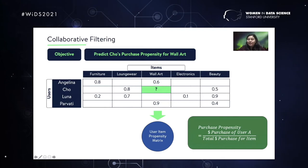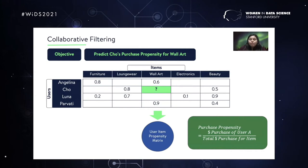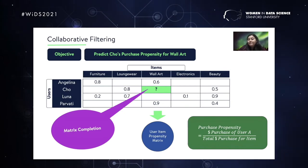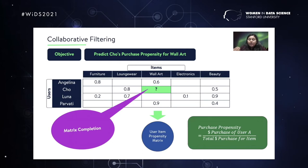For example, we have a user Cho and an item WallArt. Cho has not currently purchased WallArt, but we want to understand the propensity of purchasing WallArt in the future. This problem is called matrix completion — we start with an incomplete user-item matrix and try to come up with predictions for each of the missing cells. Let's see how we do it.